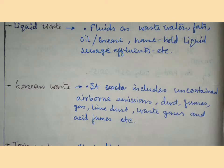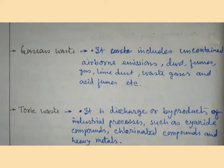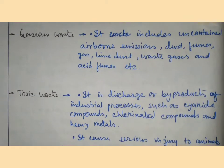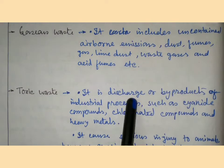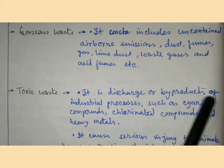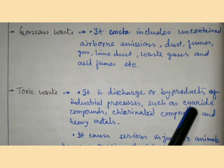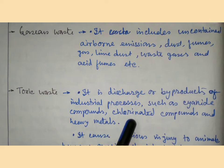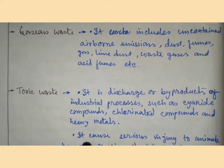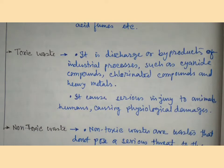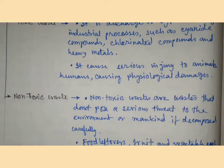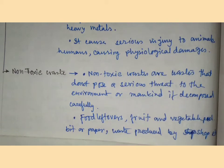Toxic waste is the discharge or byproduct of industrial processes, such as cyanide compounds, chlorinated compounds, and heavy metals. It causes serious injury to animals and humans, causing physiological damages.